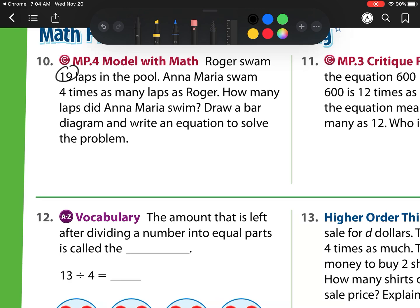Roger swam 19 laps in the pool. Anna Marie swam 4 times as many laps as Roger. How many laps did Anna Marie swim? Then it says draw bar diagram and write an equation. So here we have Anna Marie has done 4 times as many, so that means we have 4 boxes. And each box is going to be 19 because that's how many Roger swam. So one box is Roger, but all the boxes are Anna Marie's. Now my equation, if I wanted to, is I have L for laps, so L for laps is equal to 4 times as many as 19. So on the side I would do 4 times 19. 4 times 9 is 36, regroup, 4 times 1 is 1 plus 3 is 7 for 76. So that would be 76 laps.